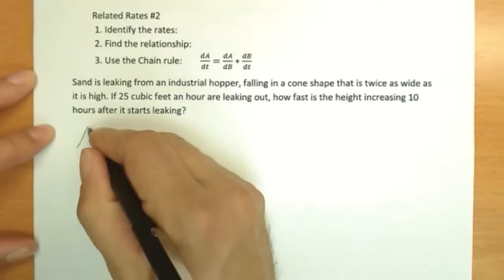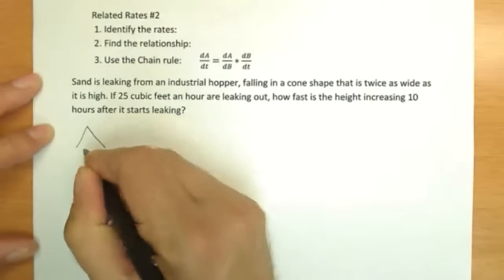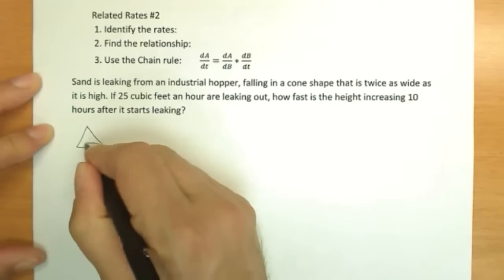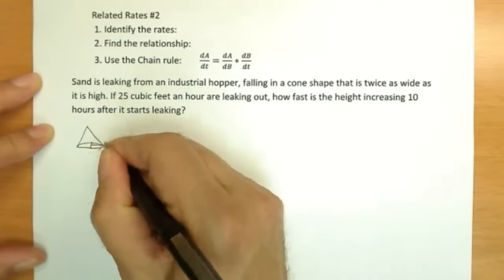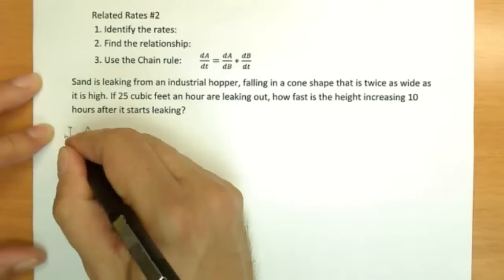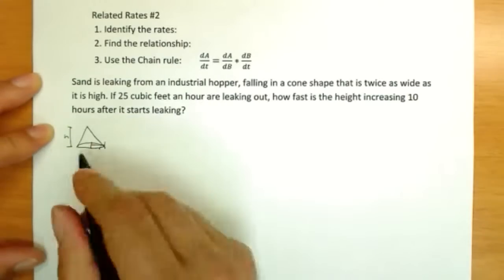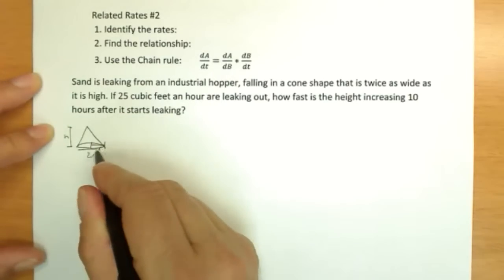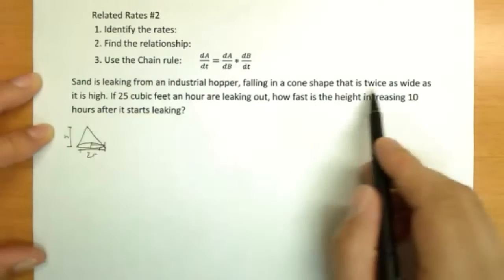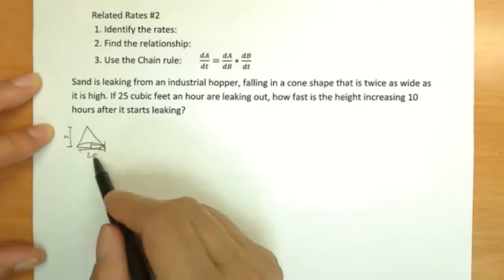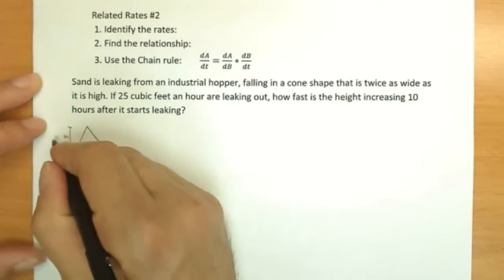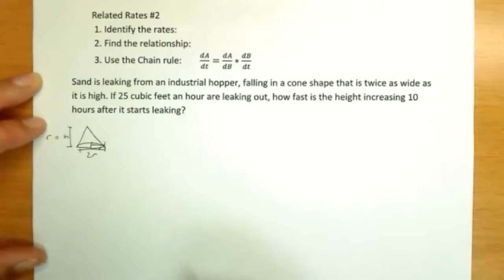So first off, let's give a picture of what we're talking about here. So it's a circular based cone, we call this the radius and this the height. Now the diameter of this thing is going to be 2r. So if it's supposed to be twice as wide as it is high, this height has to be half of this. And so for this special case, h equals r. So it's kind of a simple case.